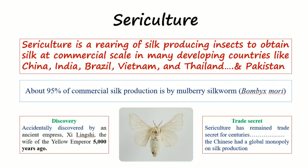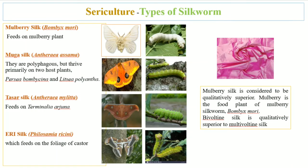It was accidentally discovered by Chinese Empress Leizu, wife of the Yellow Emperor, about 5000 years ago, when a silkworm cocoon accidentally dropped into her tea while she was sitting under a mulberry tree. The cocoon unraveled and the threads of silk opened in her tea. Sericulture then began in China and remained a trade secret for centuries, with China being the only producer of silk.